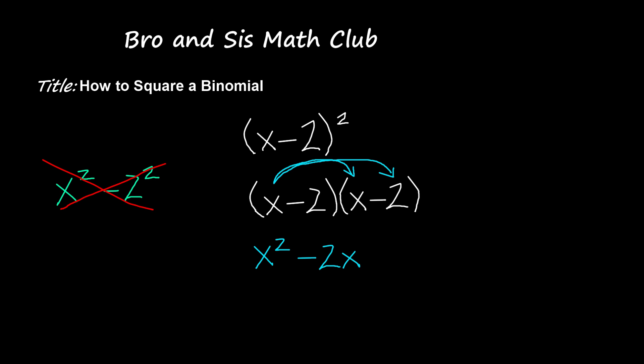Now I'm going to multiply negative 2 times the x, that gives me negative 2x, and negative 2 times negative 2 which gives me positive 4 because negative times negative is positive.